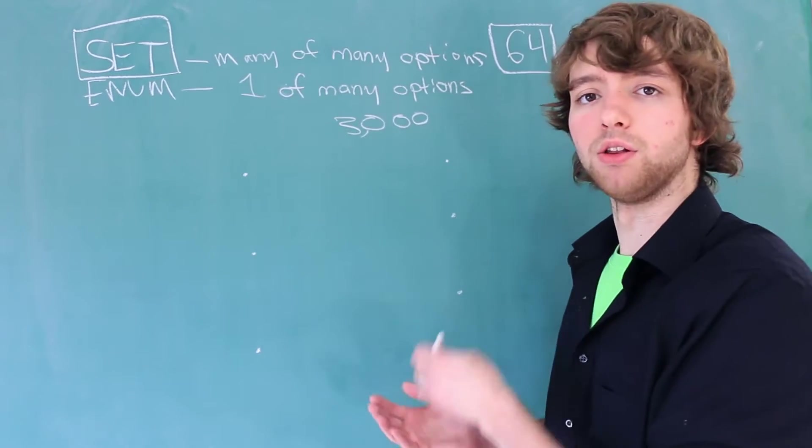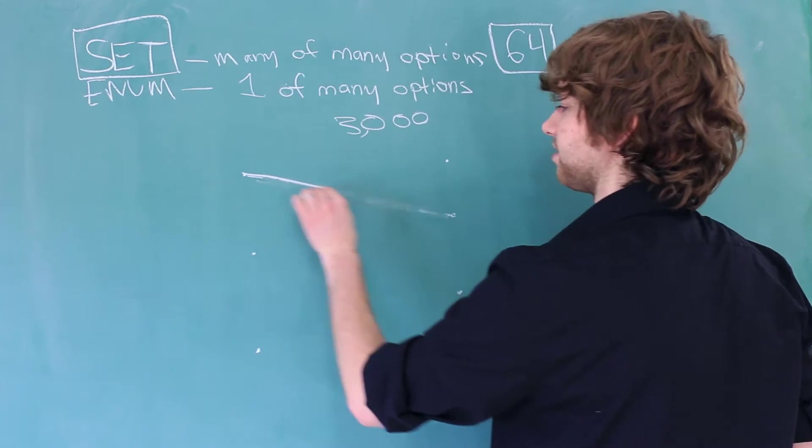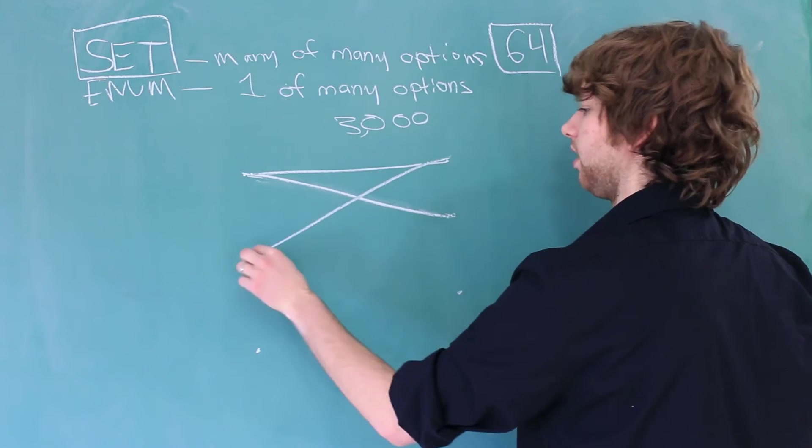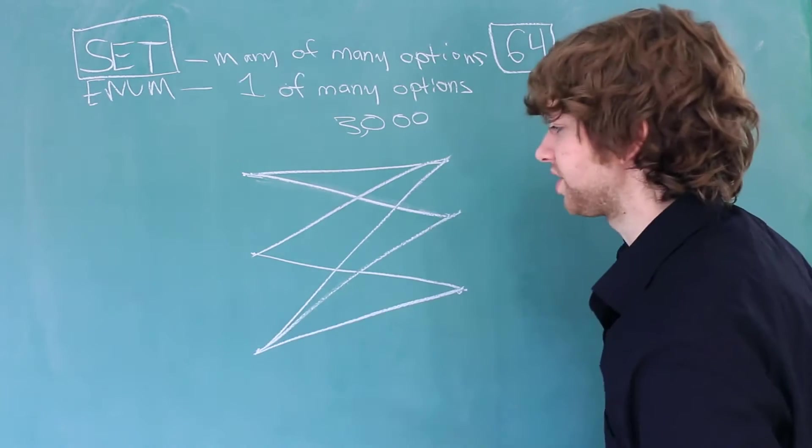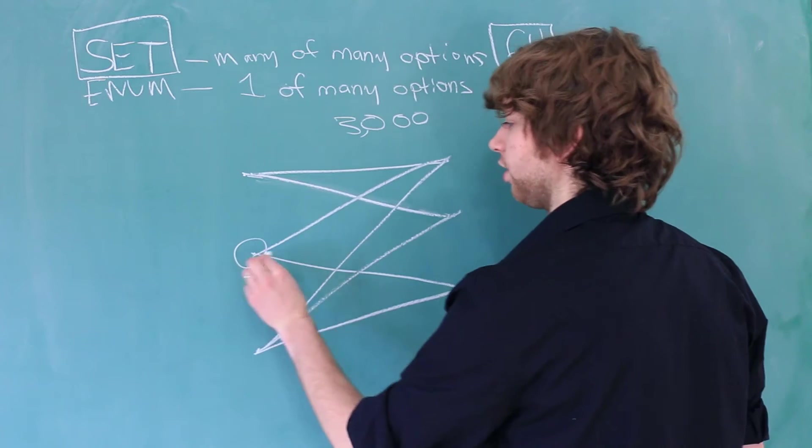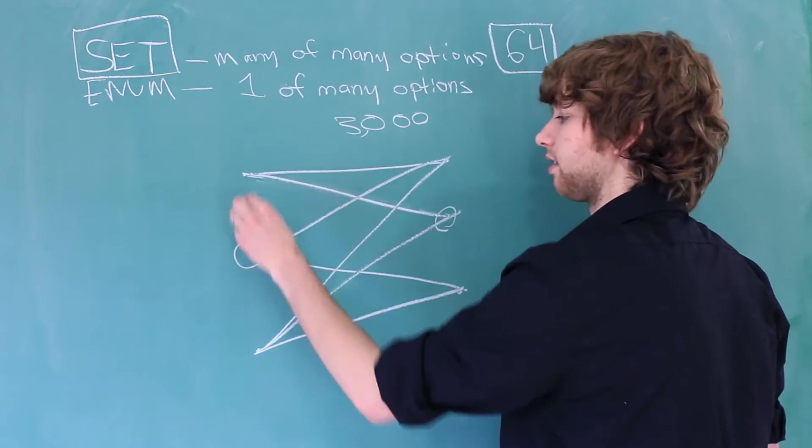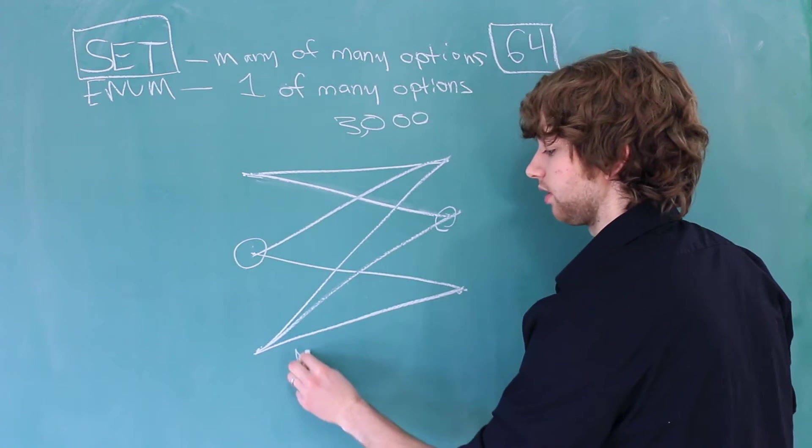And one of the columns in that row is of the set data type. So let's say this row picks this one and this one. And this one picks this one and this one. And this one picks all three. You can see that an individual entity over here can pick multiple things over here. And an individual option can be picked by multiple things. So this is a many-to-many relationship.